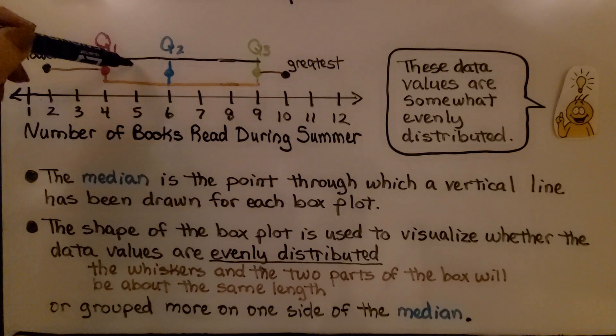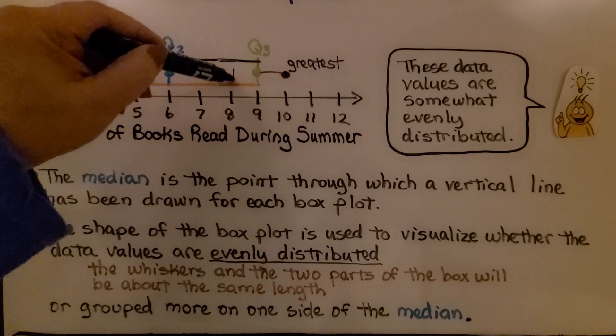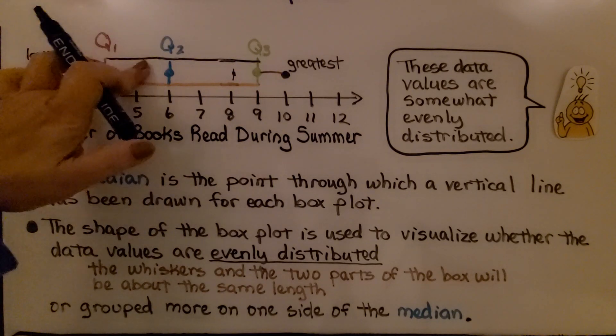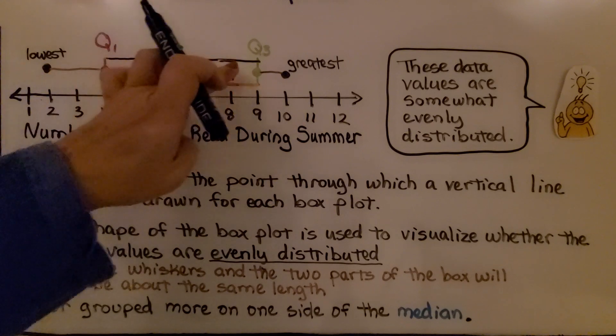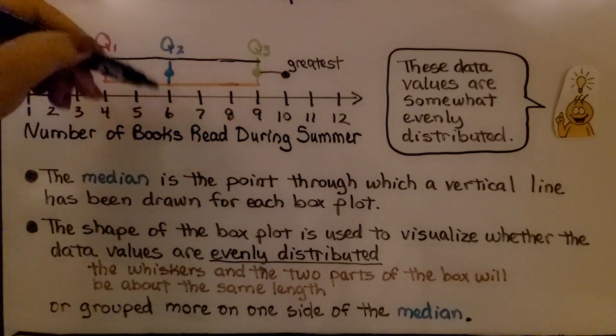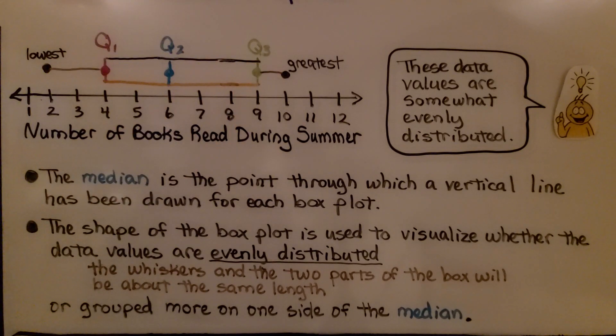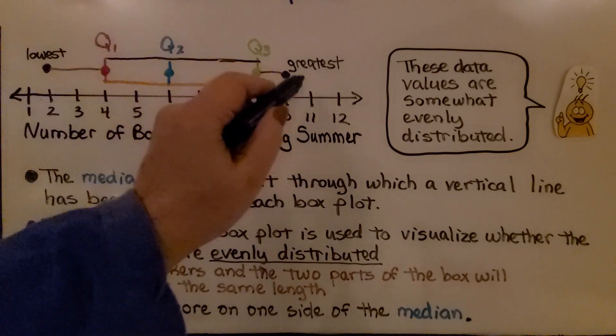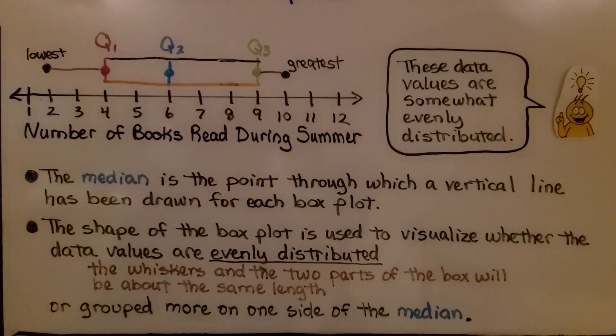So we might see the median way over here, or we might see the median way over here. Then it wouldn't be so evenly distributed. But because the median is pretty much near the center of this box, we know it's evenly distributed, along with the information that the whiskers are the way they are. They're about the same length.